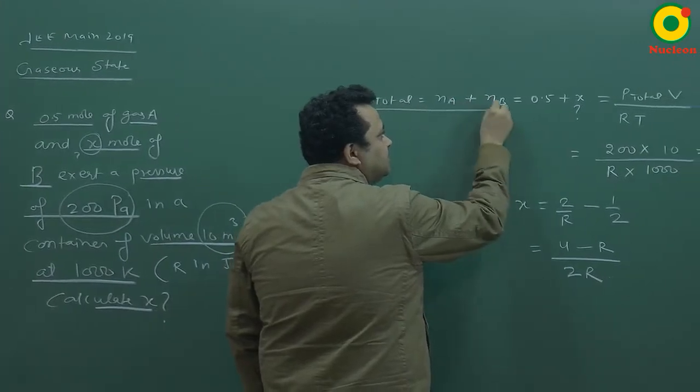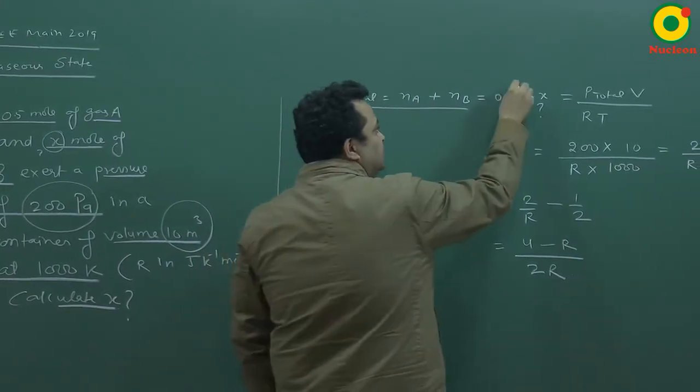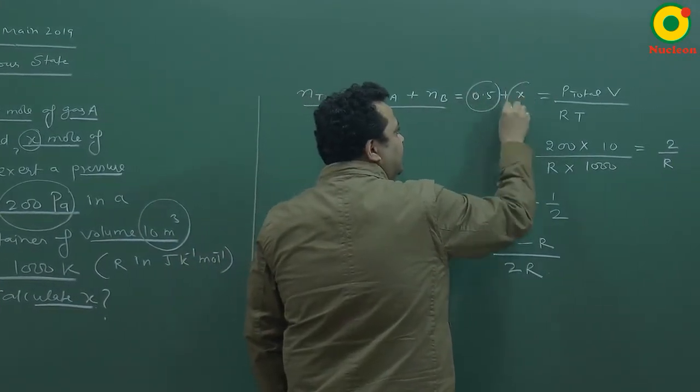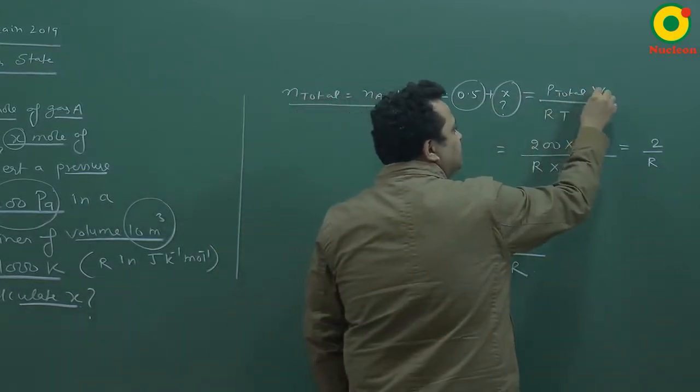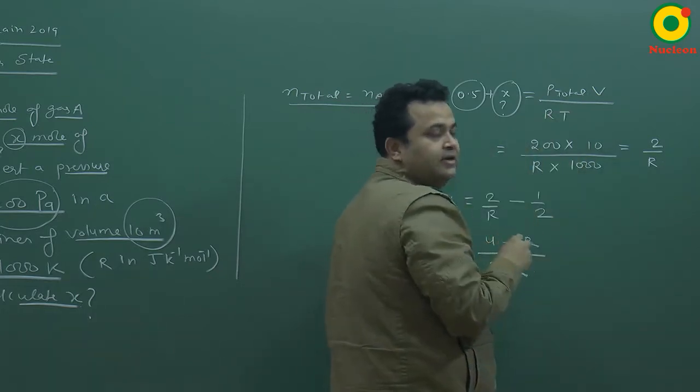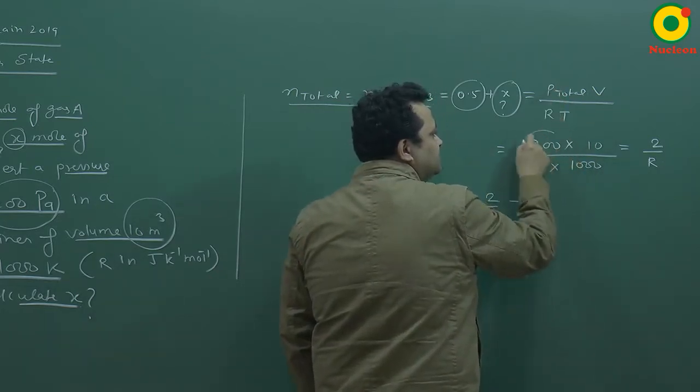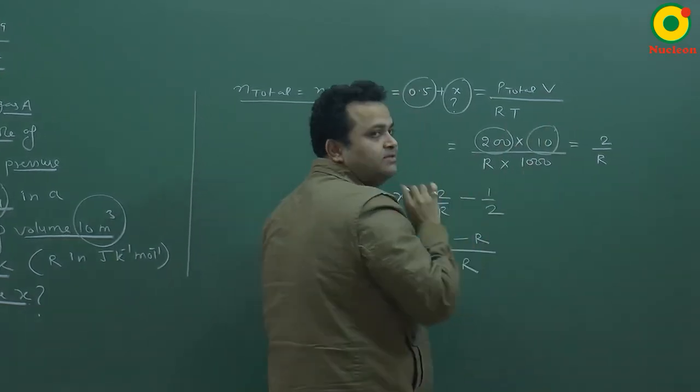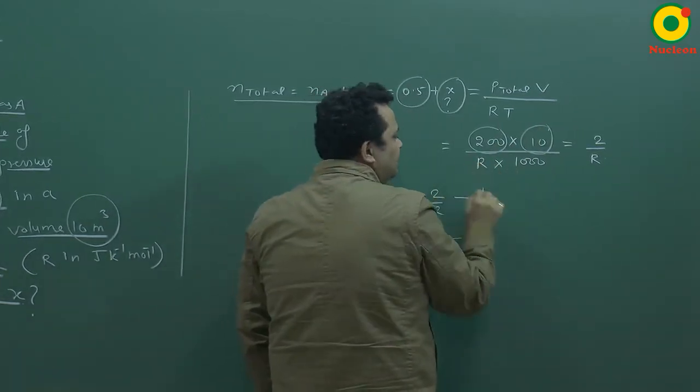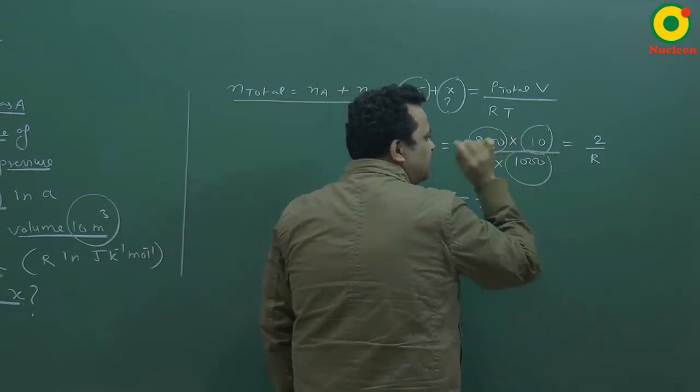0.5 moles of A and x moles of B, so x we have to find out. N total equals P total V upon RT. Pressure is given as 200 Pascal, volume is given as 10 meter cube. All SI units are as given. Temperature is in Kelvin, thousand Kelvin.